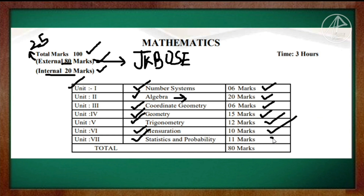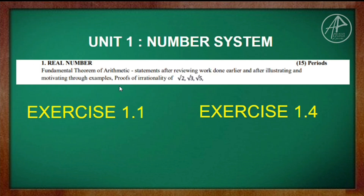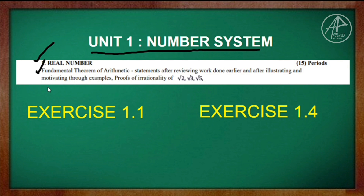Now let me tell you about Unit 1 — Number System. Unit 1 is Number System, and Chapter 1 is Real Numbers. The topic for Real Numbers includes the Fundamental Theorem of Arithmetic. This is a topic-wise presentation of what JK Board expects. Topic 1 is Proof of Irrationality — proof of irrationality is an important topic.